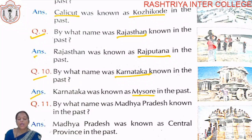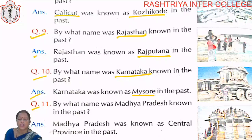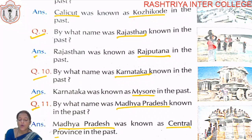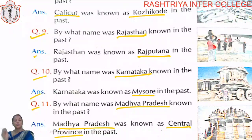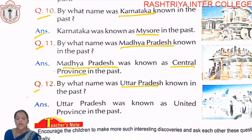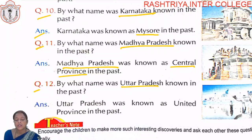Question number eleven: By what name was Madhya Pradesh known in the past? Madhya Pradesh was known as Central Province in the past. Question number twelve: By what name was Uttar Pradesh known in the past? Uttar Pradesh was known as United Province in the past.